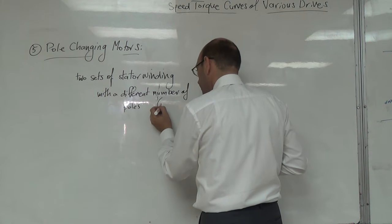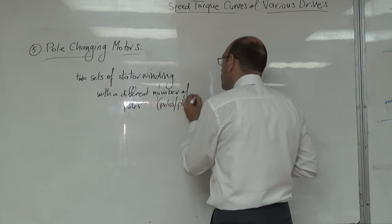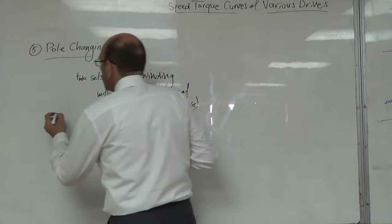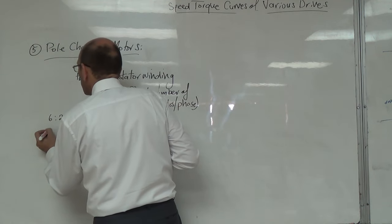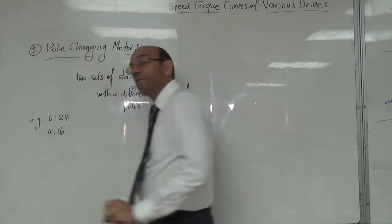وإحنا قلنا البولز وحدتها عدد مختلف من البولز. فمثلاً بيكون عندي ستة لأربعة وعشرين أو أربعة لستة عشر.